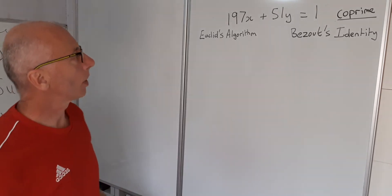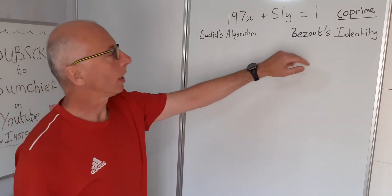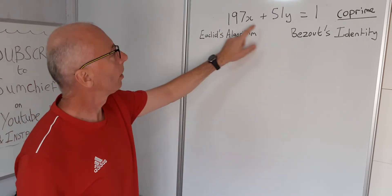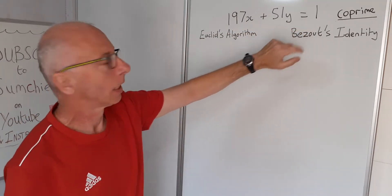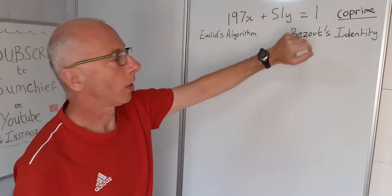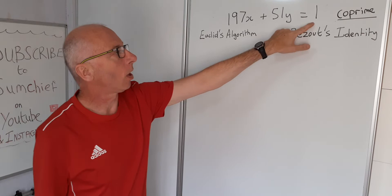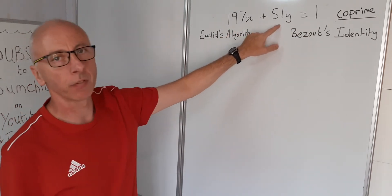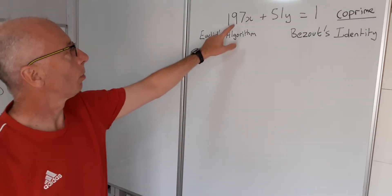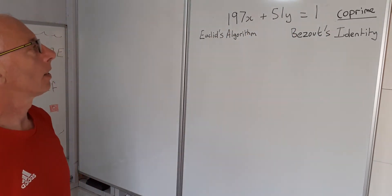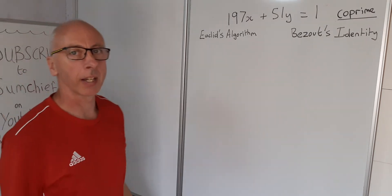Okay, so in this video we're going to use Bezout's identity to find two integers x and y to make this true: 197x plus 51y equals 1. Now we know that 1 is the greatest common divisor of 197 and 51 because these two numbers here are both co-prime, which I've written here for you.